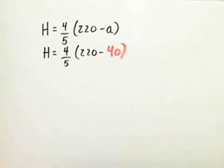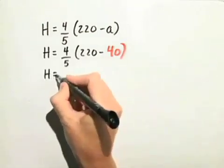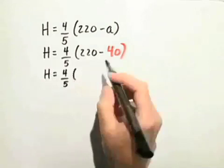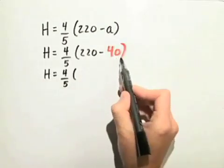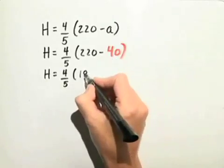Let's follow the order of operations to simplify. So, we get H is equal to four-fifths times, when we simplify inside the parentheses, 220 minus 40 gives us 180.